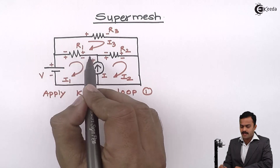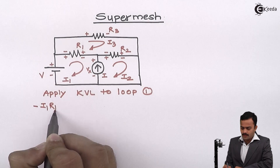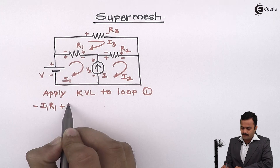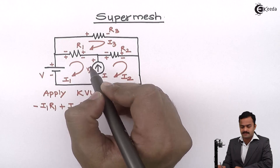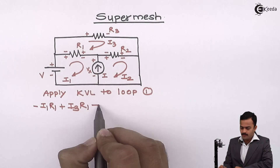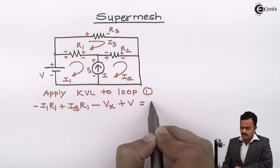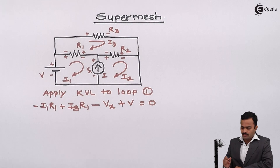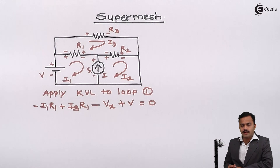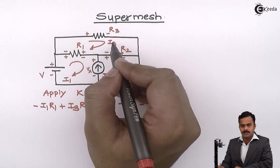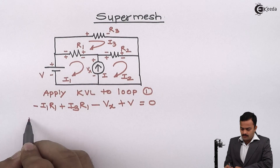Applying KVL to loop one, starting from a point and tracing the path: the voltage drops give us minus I1·R1 plus I3·R1, then minus Vx, then plus V equals zero. Now since I have three loops, three loop currents are unknown, but the problem is that along with I1, I2, and I3, there is one more unknown, which is Vx.